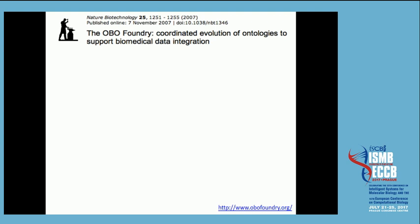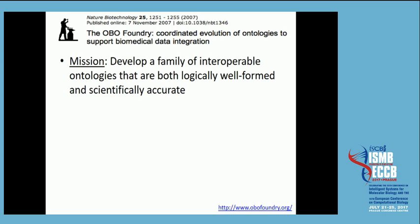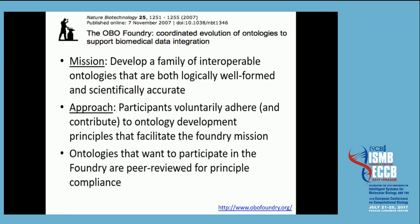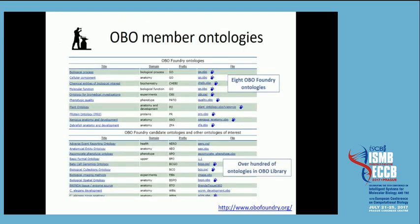OBO Foundry, as you might know, is an initiative from 2007 about integrated ontology development, with a mission to develop a family of interoperable ontologies that are logically well-founded and scientifically accurate. Participants voluntarily adhere to a set of principles that facilitate the Foundry mission, and there is a review process. There are several hundred ontologies in the OBO library and nine ontologies in the OBO Foundry. Many things in the library are very useful but not in the Foundry, and this distinction is potentially problematic.